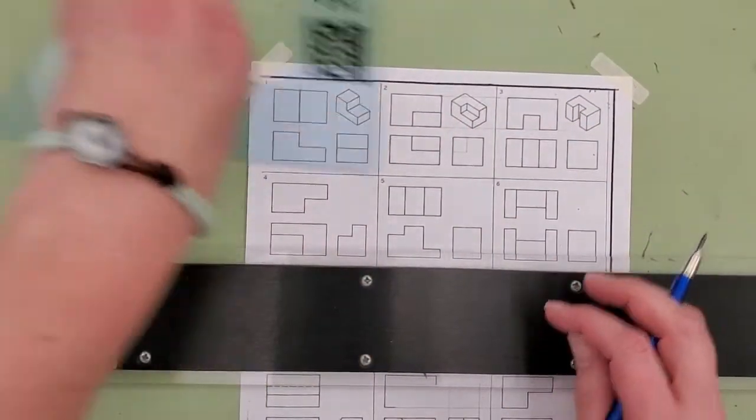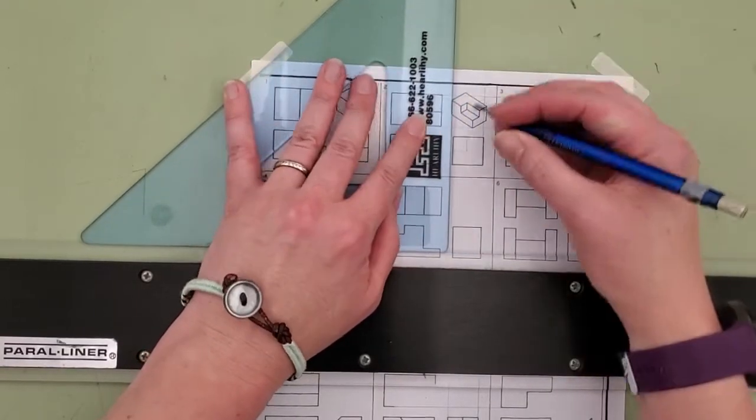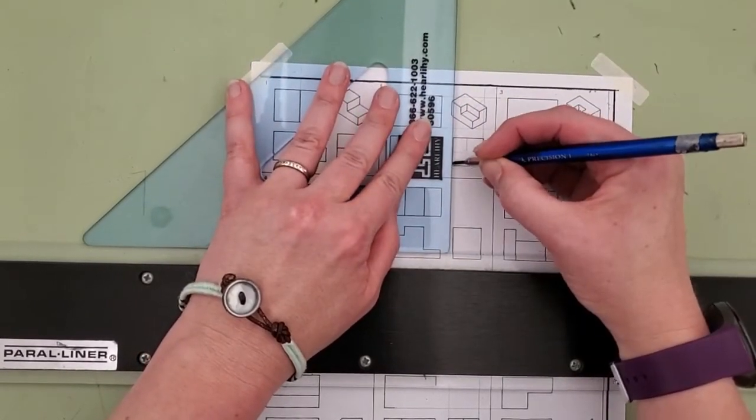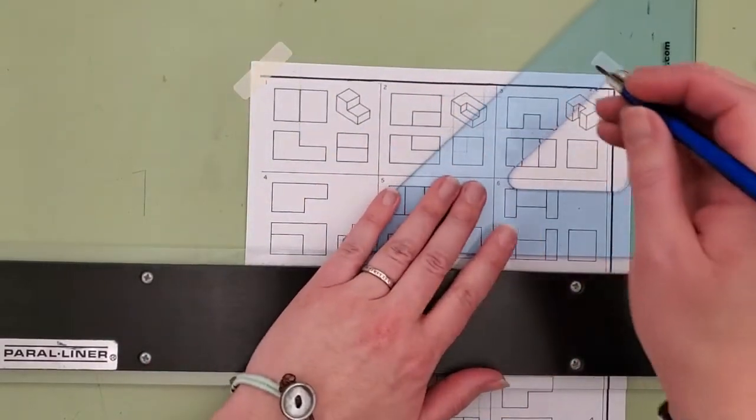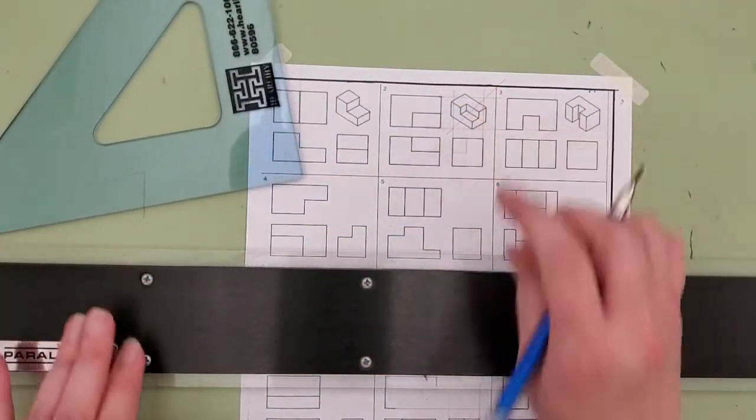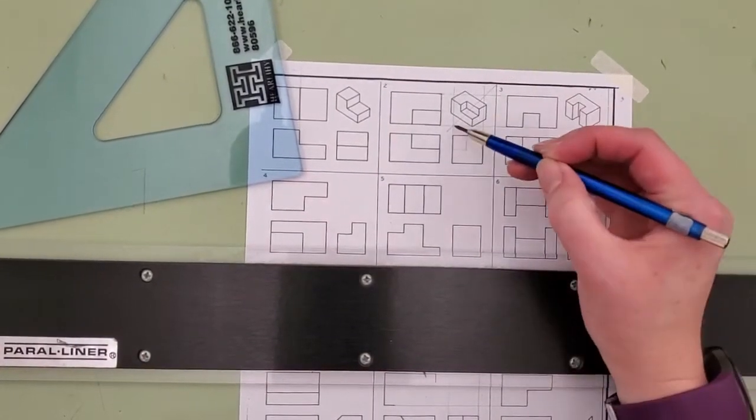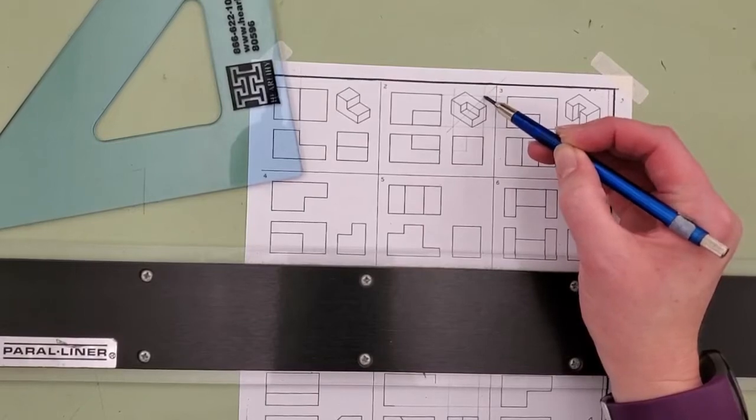Then I'm going to take the boundary lines for my side view and transfer those up and then connect the two. Now you can see I've done this before, but I was having camera issues so I had to erase and try again. But now I have my 45 degree angle there.